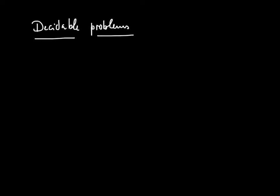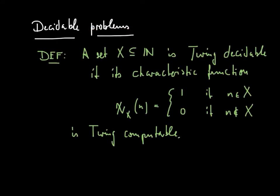So once we have the notion of a Turing-computable function, we can now also define what it means for a set to be decidable, or more general, for a problem to be decidable. We call a set of natural numbers Turing-decidable if its characteristic function, so the function given as chi sub X of N where the value is 1 if and only if N is in X, otherwise it's 0, if this function is Turing-computable.